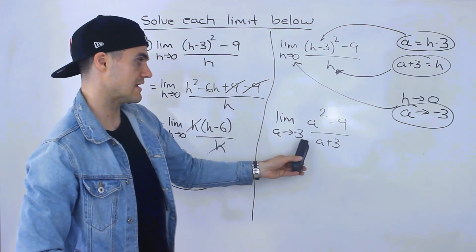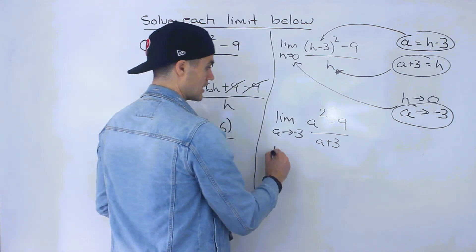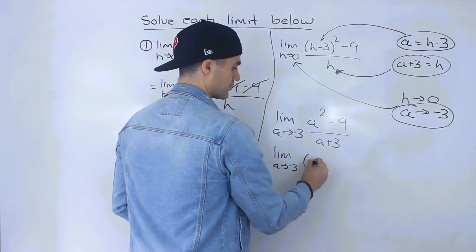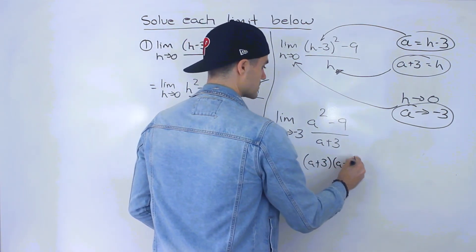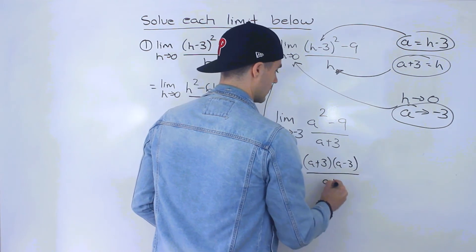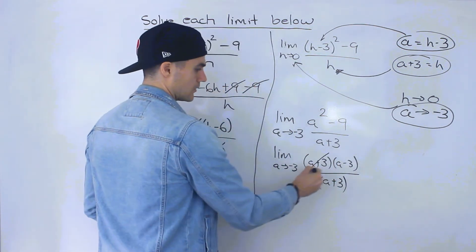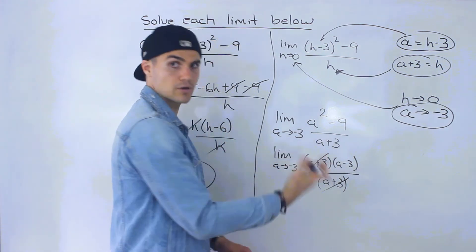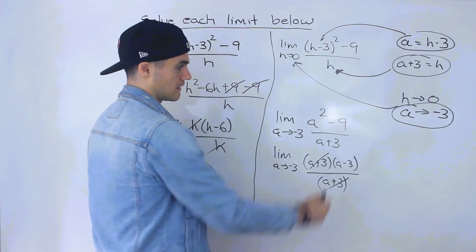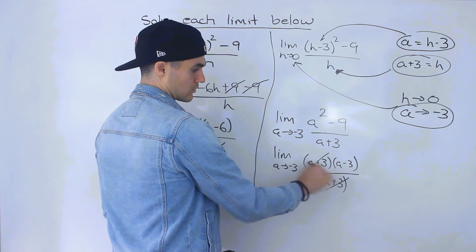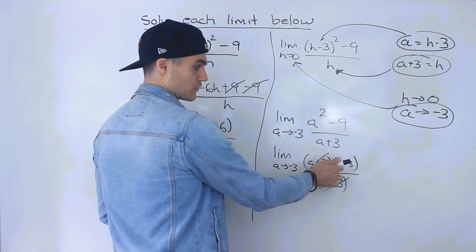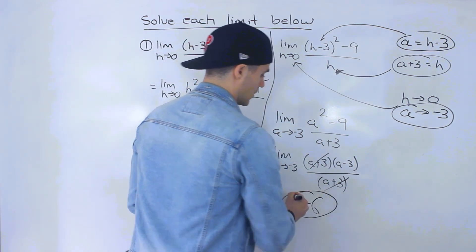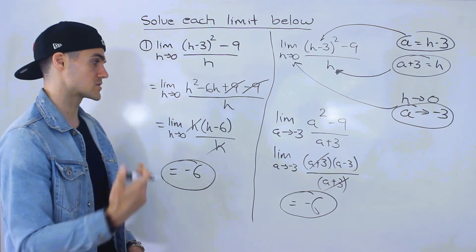And now notice that this is easier to work with than that because we can just simply factor that top portion to a plus 3 a minus 3. And this is all over a plus 3. And now notice that those cancel out. Notice we couldn't do a direct substitution initially because negative 3 plus 3 would give us 0. So we've got to get rid of this a plus 3. But when we factor the numerator those cancel out and now we could plug in negative 3 for this a value negative 3 minus 3 that gives us negative 6 which is the same answer that we got in methods 1 and 2.